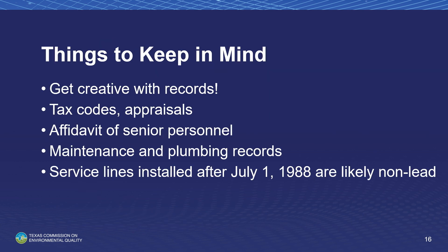Here are important things to keep in mind when reviewing historical records. All water system records are required to be reviewed. Get creative with record review if the system has limited or no historical records. The system can include tax codes and appraisals. Systems can interview senior personnel and put that information into an affidavit, which becomes a water system record. Systems should use all past and current maintenance and plumbing records. As a reminder, any service lines constructed and installed after the Texas lead ban of July 1st, 1988 are likely non-lead when reviewed against all water system records.